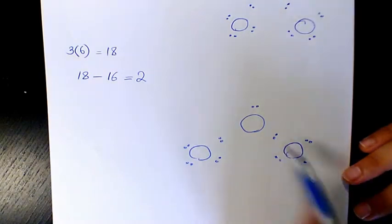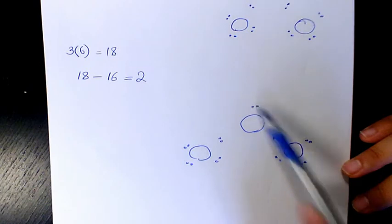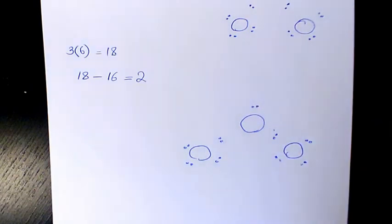2, 4, 6, 8. That has an octet. This one, same thing. But if we look at this oxygen, 2, 4, 6. So that's not an octet.